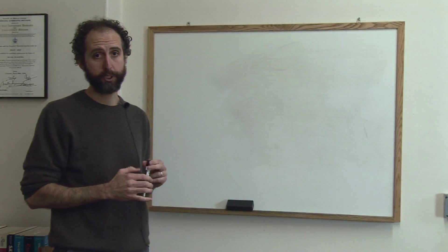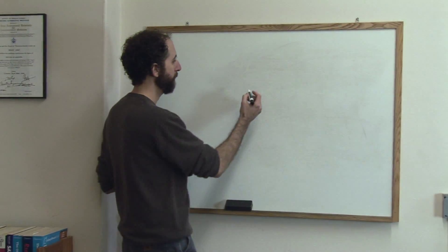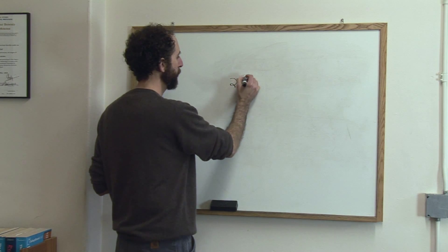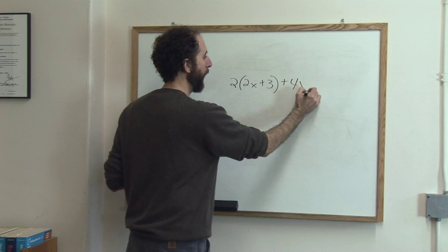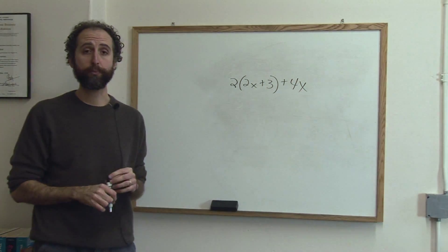Let's say you want to simplify a variable expression. So let's say you have 2 times 2x plus 3 plus 4x. It's called a variable expression.